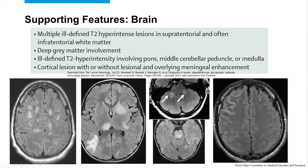The supporting features for a brain episode: if you have multifocal ill-defined T2 hyperintensities, that counts. If you have deep gray matter involvement — here we see the thalamus and the basal ganglia — that's also a typical finding of MOGAD. Or if you have large ill-defined lesions within the pons or the middle cerebellar peduncle, that can count as a supporting feature. Or if you have cortical T2 hyperintensity — as seen with cerebral cortical encephalitis — where you have cortical swelling and sometimes leptomeningeal enhancement. This can be difficult to diagnose because sometimes these patients won't have any white matter lesions, but pathology confirms demyelination.